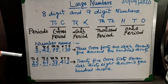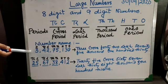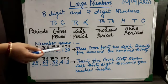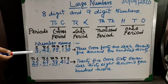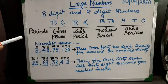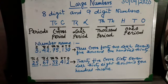Here I have given you two examples so that you can understand eight digit and nine digit numbers better. The first example is an eight digit number. I have written the place value chart above the numbers to help us read the numbers properly. You can see that three comes in the place of crore, so we read it as three crore, then forty two lakh, seventy five thousand, one hundred and thirty.